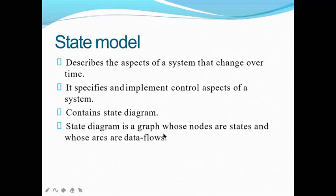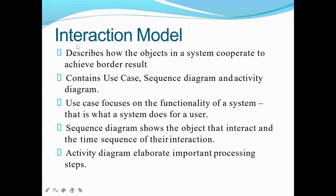Moving towards the next one — it is your interaction model. This model shows how the objects are going to interact whenever any specified task is given. Suppose in the class some task is given — how the students are interacting — that is what you show in the term of your diagram. That is known as your interaction model. To show the interactive way, you have to follow these diagrams: the first one is the use case diagram, the next one is the sequence diagram, and the next one is the activity diagram. We will see in detail how all these things work.